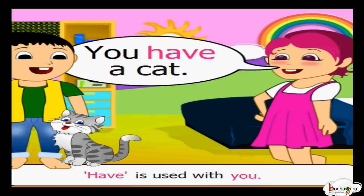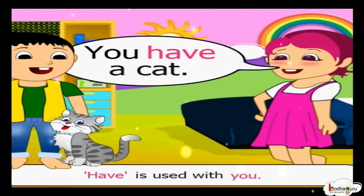Ritu is talking to Aman. Ritu says, you have a cat. 'Have' is also used with 'you'. When you are talking to someone, you can use 'you have' to talk about his possessions. For example, you have a bat. You have a parrot. You have a laptop.